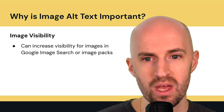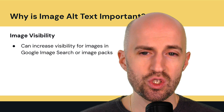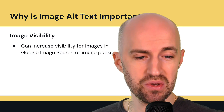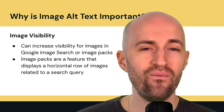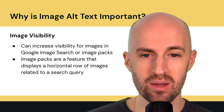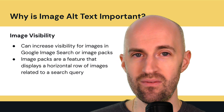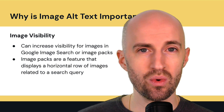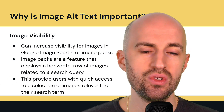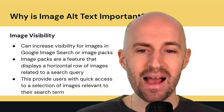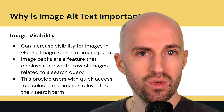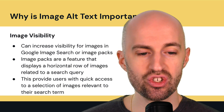Next is image visibility. Image alt text can also increase the visibility for images in Google Image Search or image packs in the SERPs. Image packs are a feature that displays a horizontal row of images related to the search query you entered. This is really great for gaining visibility — it provides users with quick access to a selection of images relevant to their search term, and the images displayed there get additional visibility.